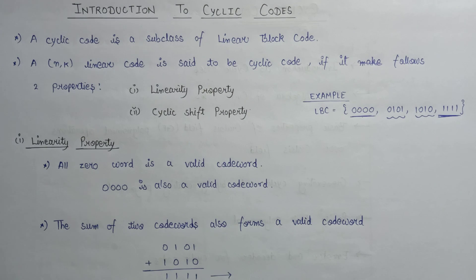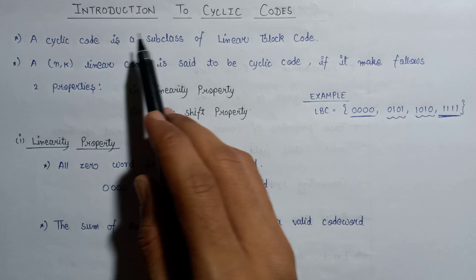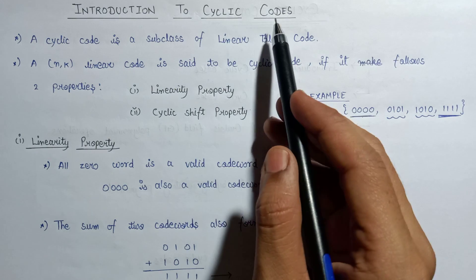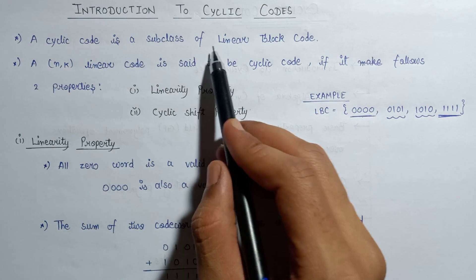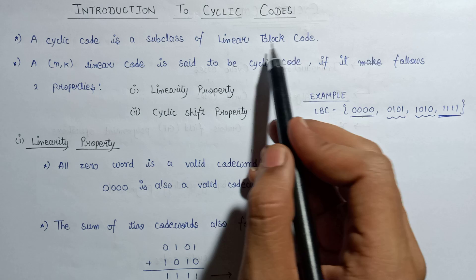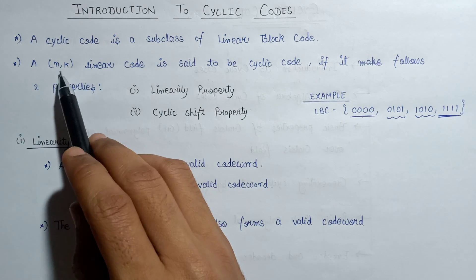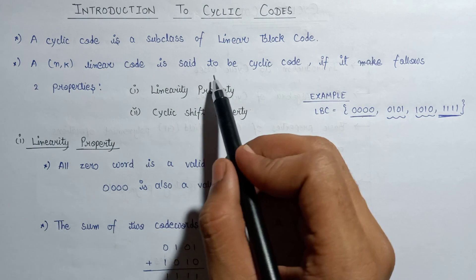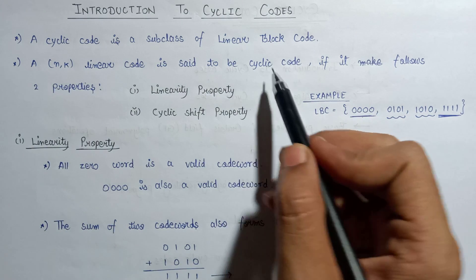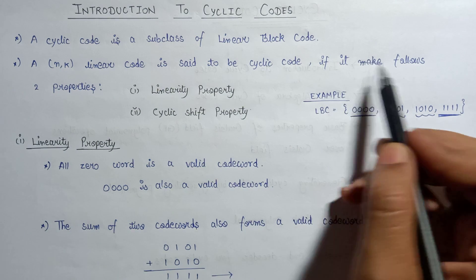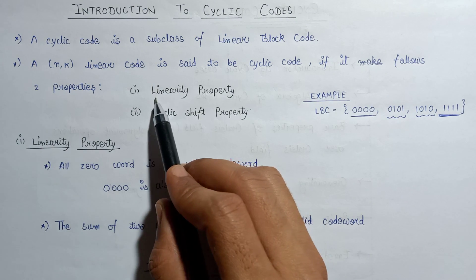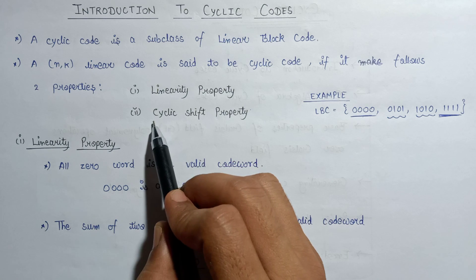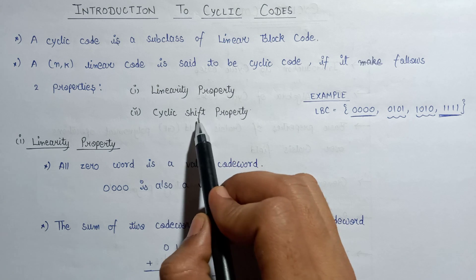In this lecture we are going to learn about introduction to cyclic codes. A cyclic code is a subclass of linear block code. An (n, k) linear code is said to be cyclic if and only if it follows two properties: the linearity property and the cyclic shift property.